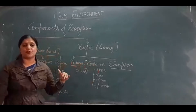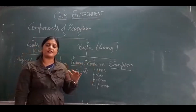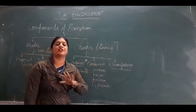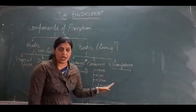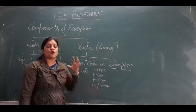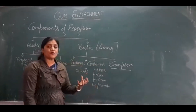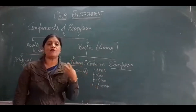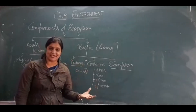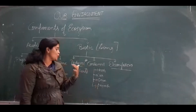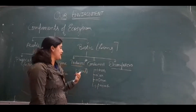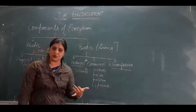First is producers. Examples of producers are always green plants, green trees, and green grass. Producers make their own food by the process of photosynthesis. So autotrophic organisms are always categorized as producers.